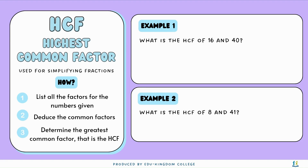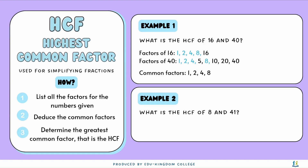What is the highest common factor of 16 and 40? First, we list out all the factors. 16 has factors 1, 2, 4, 8, and 16, and 40 has factors 1, 2, 4, 5, 8, 10, 20, and 40. Then, we can see the common factors are going to be 1, 2, 4, and 8. The largest number is going to be the highest common factor, so the HCF is going to be 8.